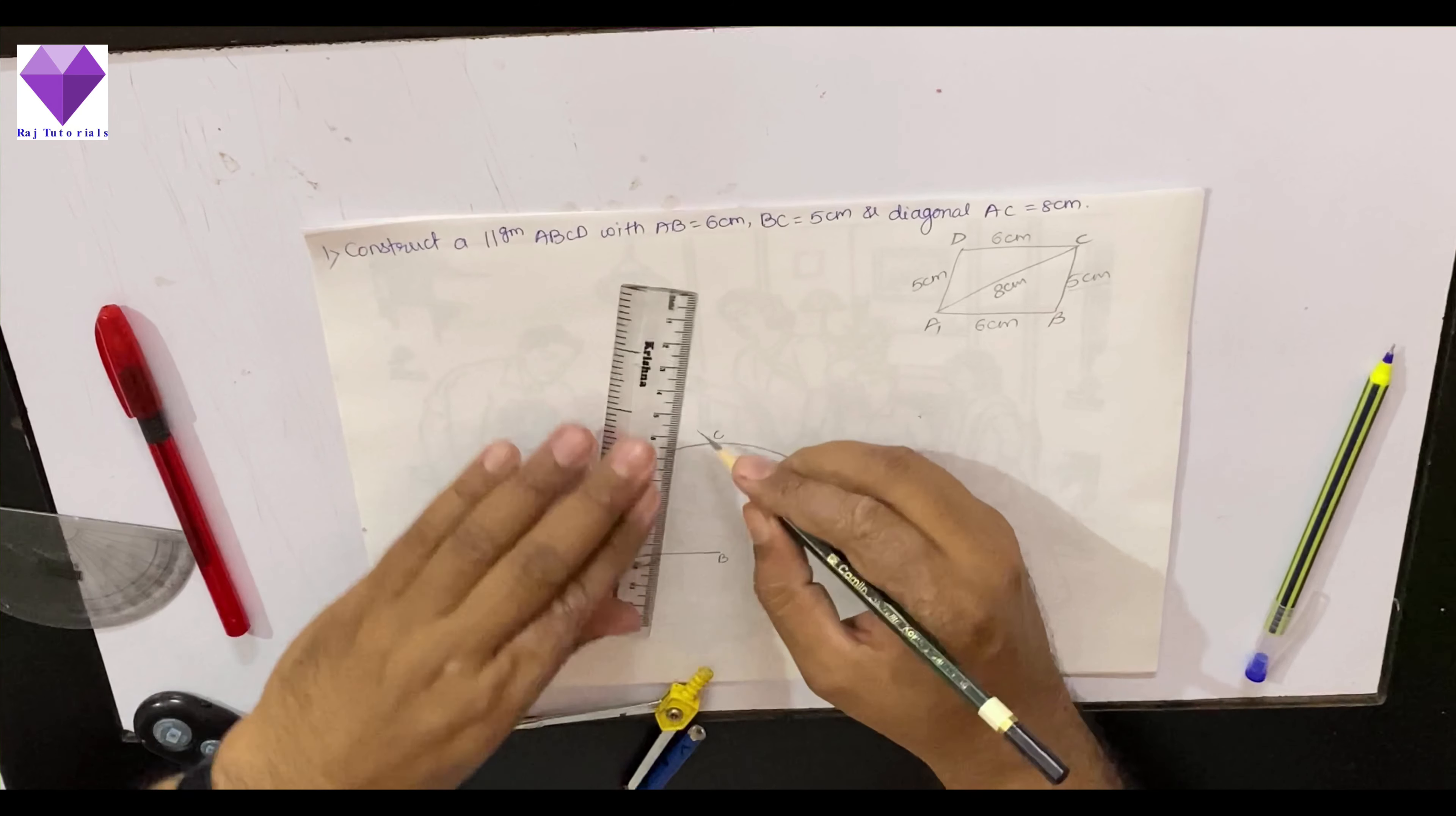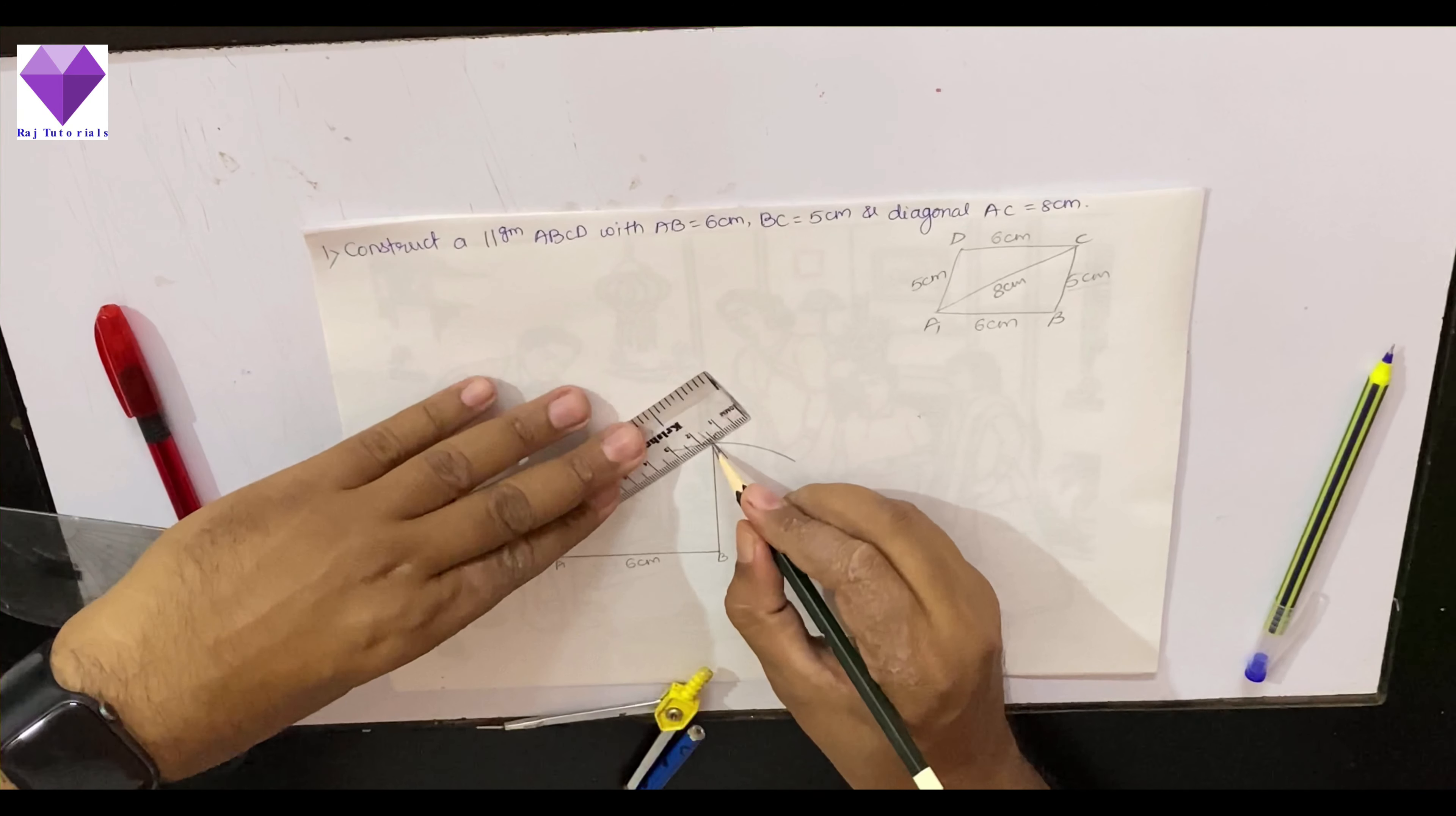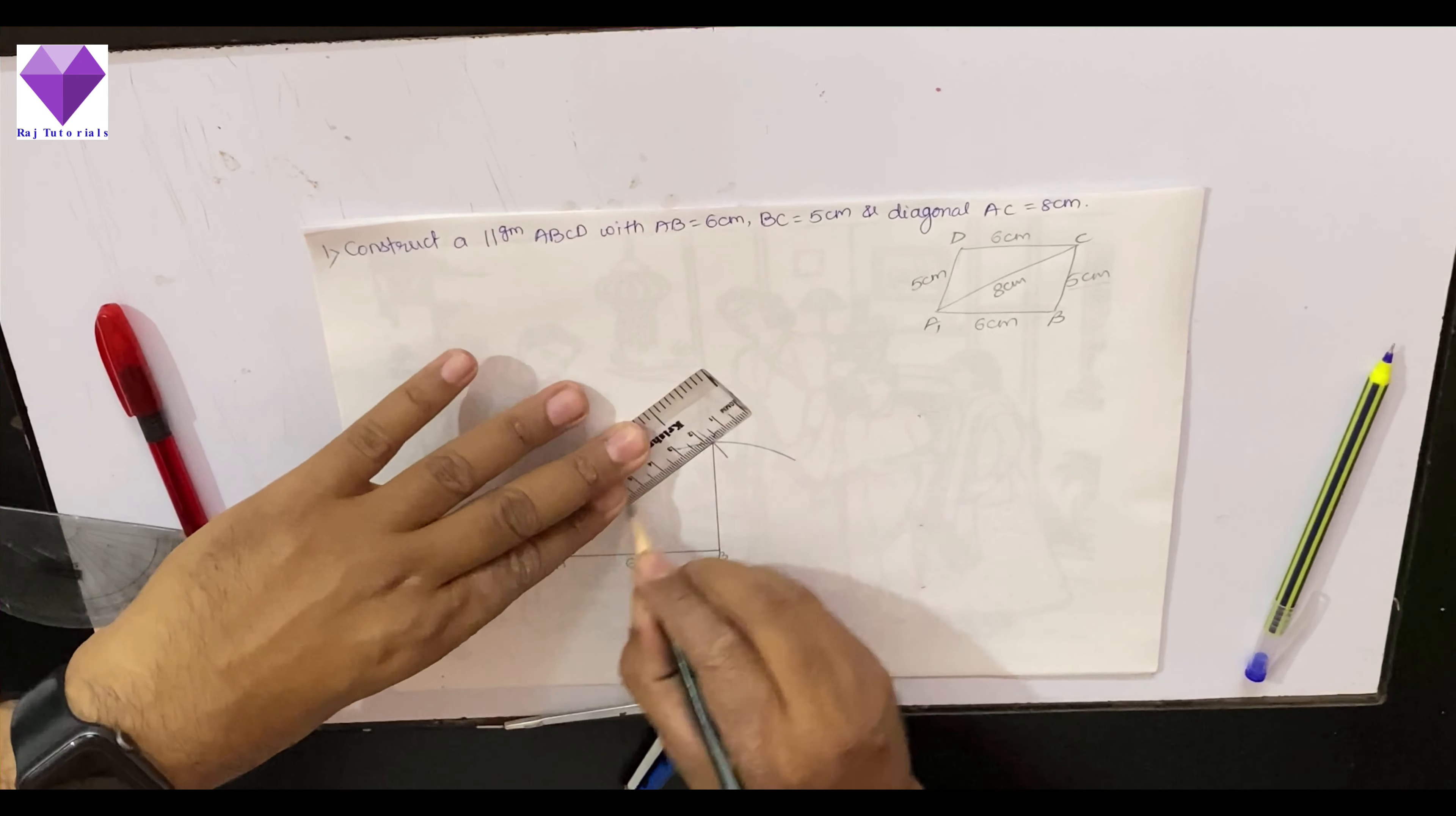Now I will join B, C and AC. One triangle out of two triangles is ready. This is 5 cm, this is 8 cm.